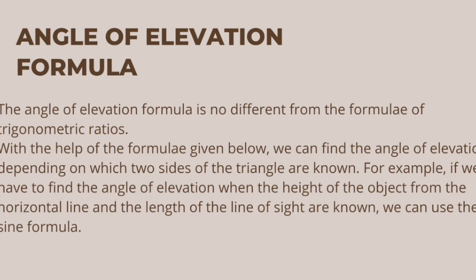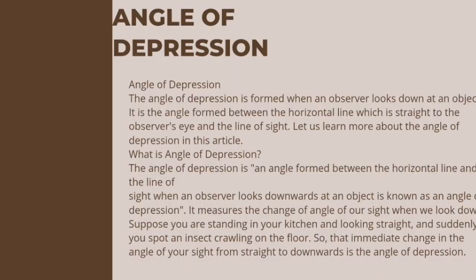Let us understand the difference between the angle of elevation and depression from the given table below. Angle of depression terminology: The angle of depression involves the following terminology — the observer, or the person who observes; the object, which is the object being observed; and the horizontal line, a horizontal ray that starts from the observer; and the line of sight, the line that connects the observer and the object. The angle of depression is the angle between the horizontal line and the line of sight.